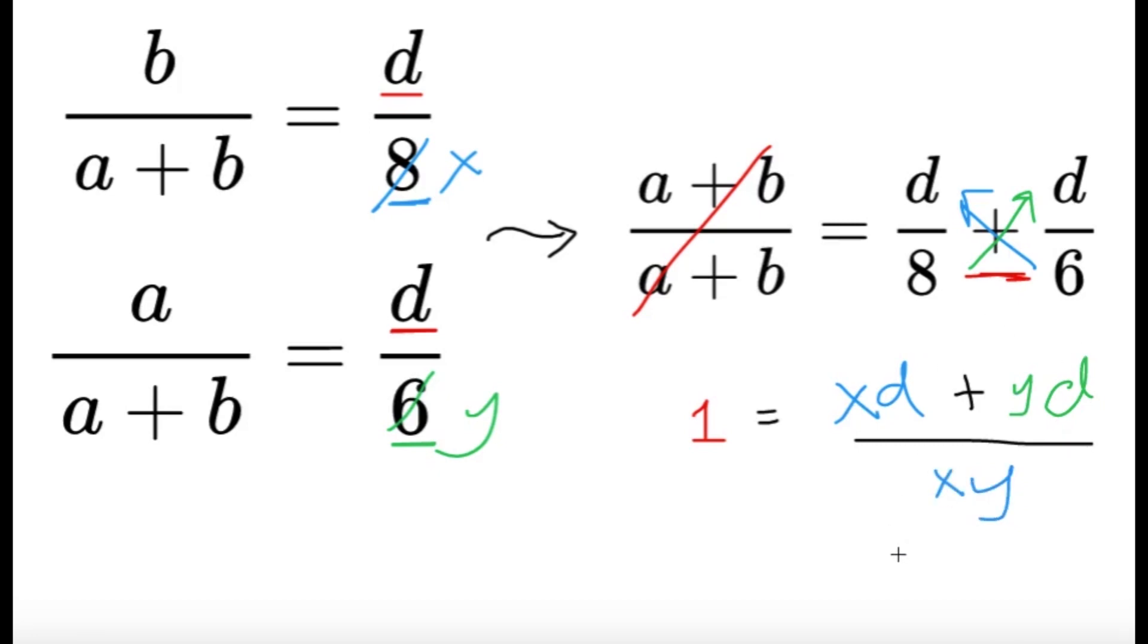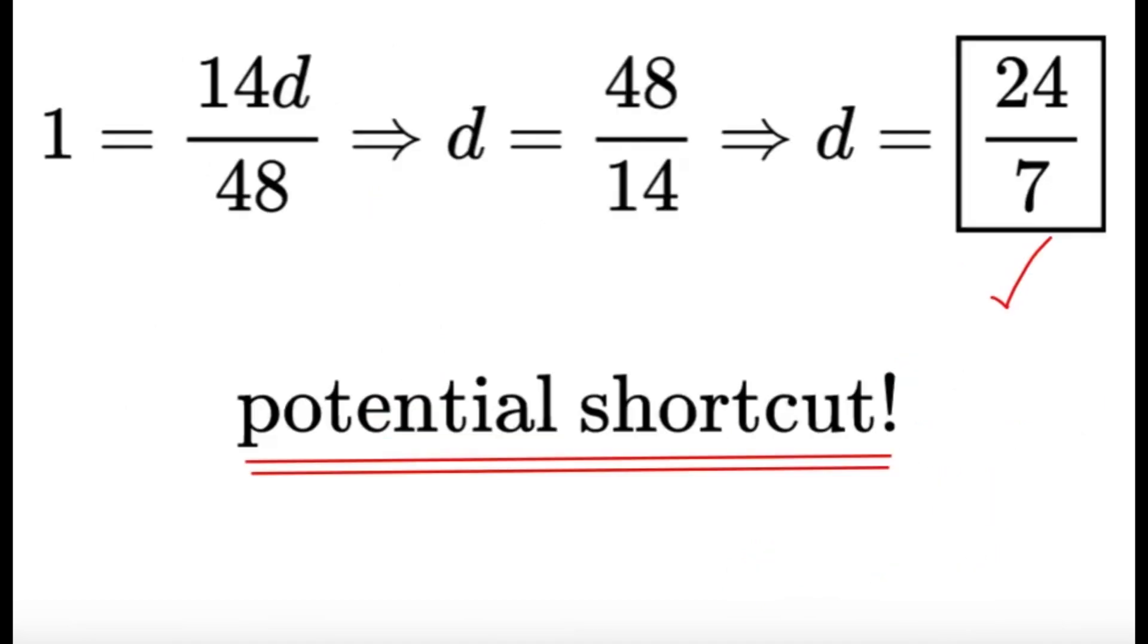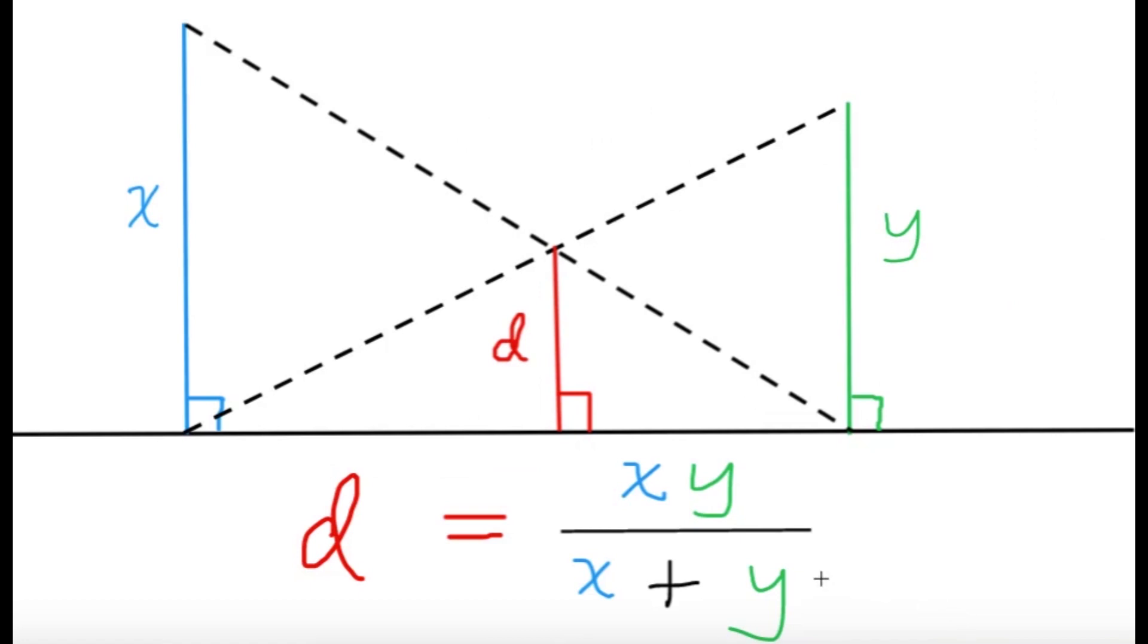If you solve for d over here, we'll be getting that d is going to equal xy divided by x plus y. So that's the formula to see here, and this is indeed true for all values of x and y. So if you have this kind of setup, the shortcut for the value of d or the length of this red segment is simply xy over x plus y. So hopefully this is an additional information for you guys.